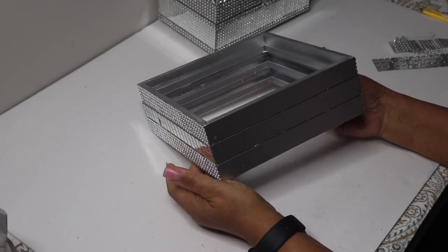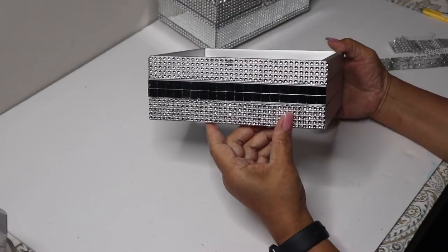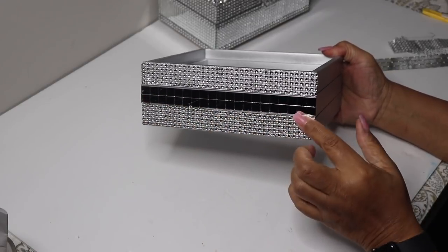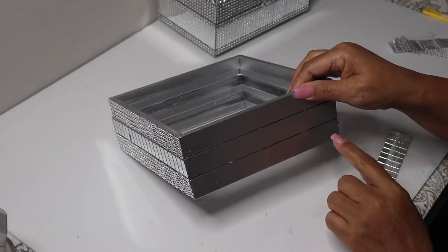I decorated the bottom of the box to match the top. I used two rows of mirror tiles in the center and five rows of bling above and below it.